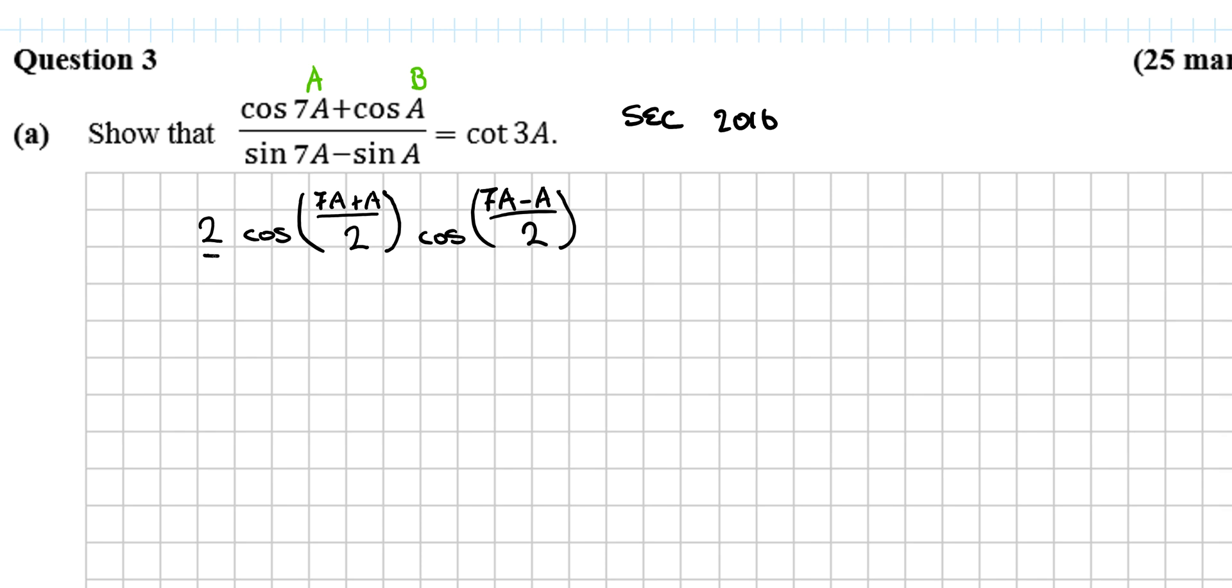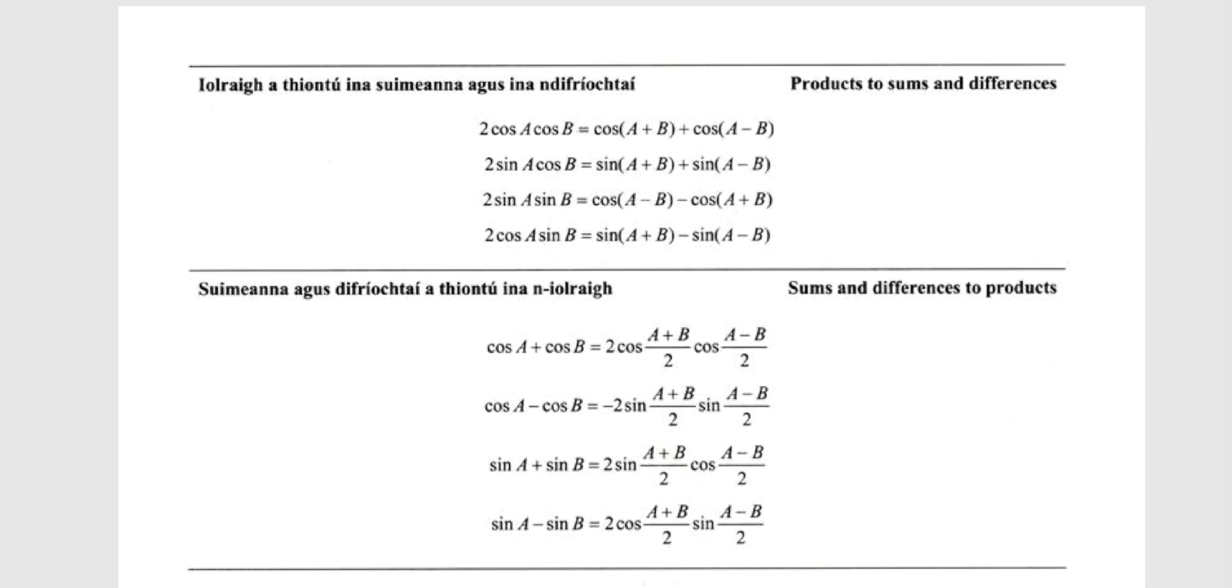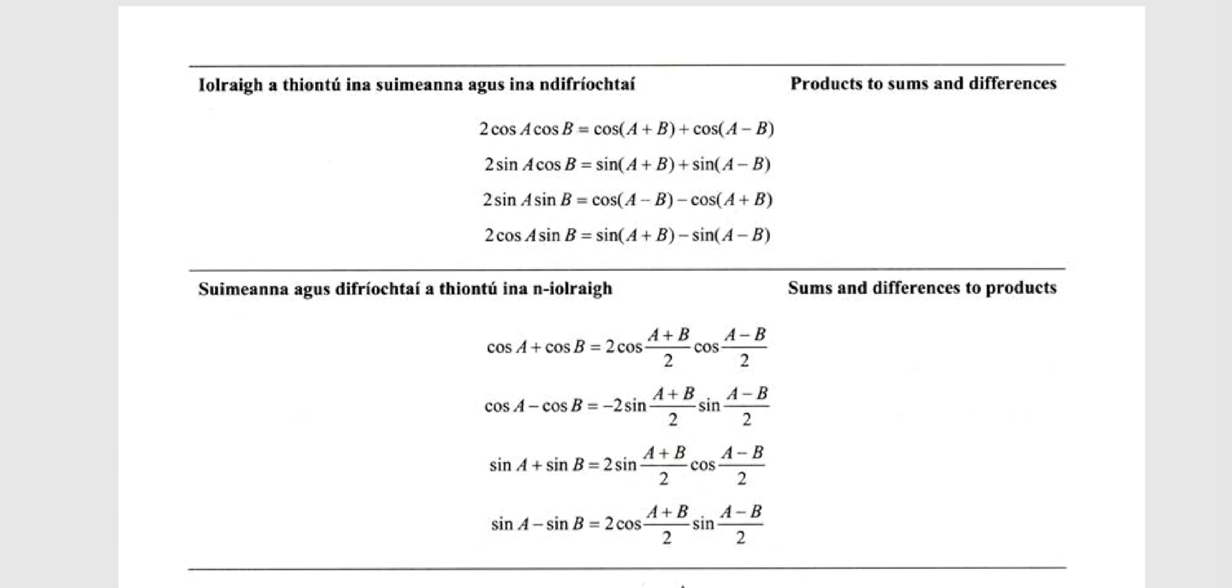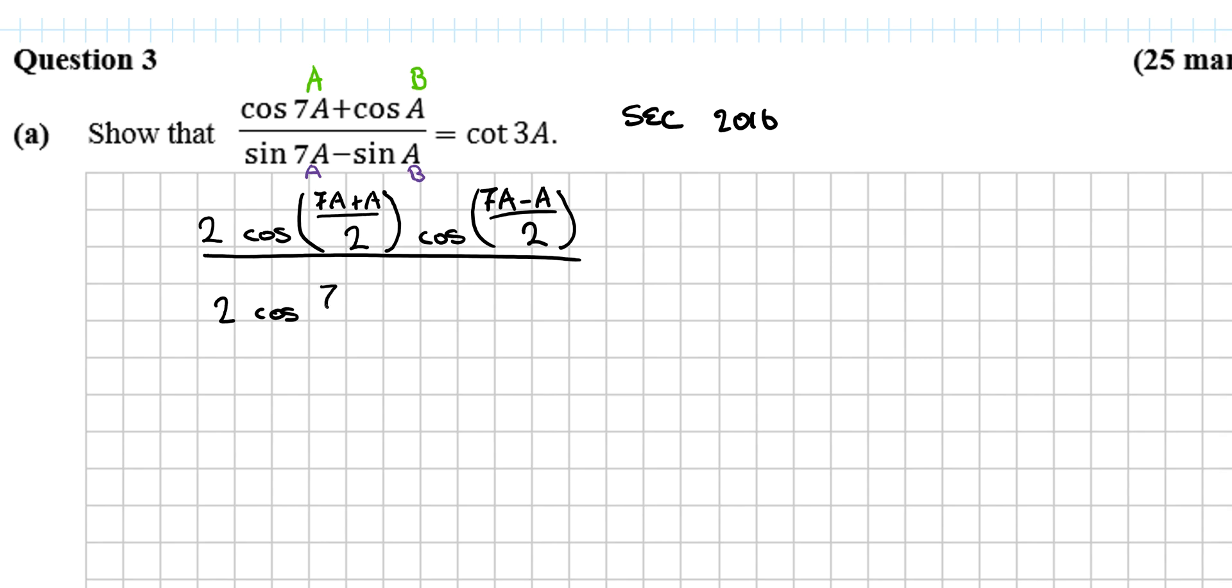And then on the bottom line we have something very similar again, an a and a b effectively, so sin a minus sin b. Go to your log tables where there's sin a minus sin b is here. So you get 2 cos a plus b over 2 sin a minus b over 2.